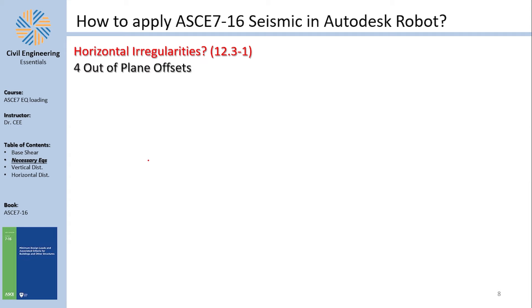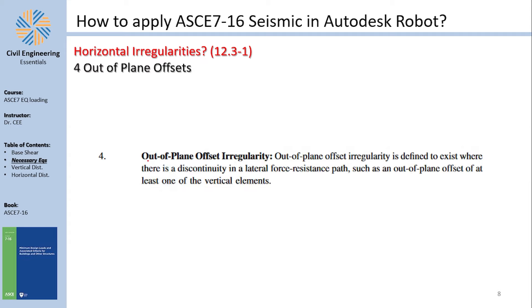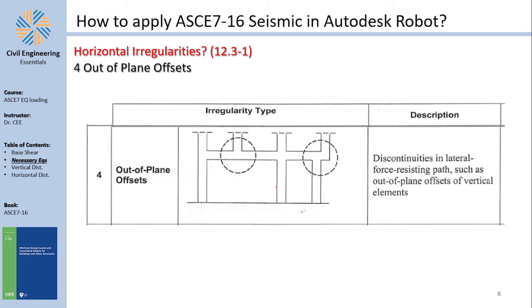Out-of-plane offset irregularity involves a discontinuity in the force-resisting path — for example, planted new columns or offset columns. There are no specific percentage numbers for this one; it is relatively straightforward to detect.